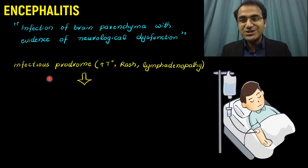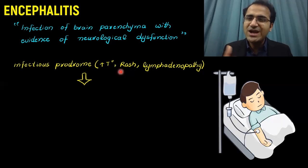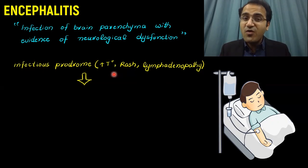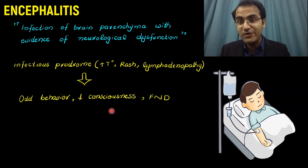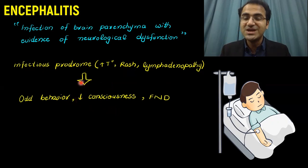Usually, the patients of Encephalitis, when they present to you, they have a history of an infectious prodrome. They will give you a history of any infection, increased temperature, rash, lymphadenopathy, of being sick a few days ago. And then after that infectious prodrome, they develop odd behavior. Their attendants would tell you that the patient got odd behavior and all of a sudden his condition exacerbated — he had decreased consciousness and developed focal neurological deficits. So after an infectious prodrome, Encephalitis appears, meaning that viral illness resulted in Encephalitis.